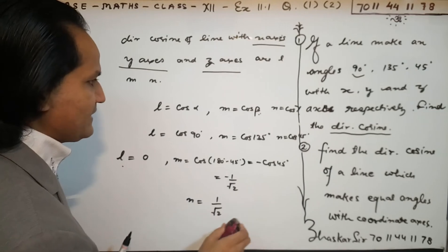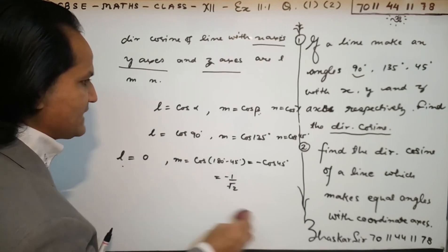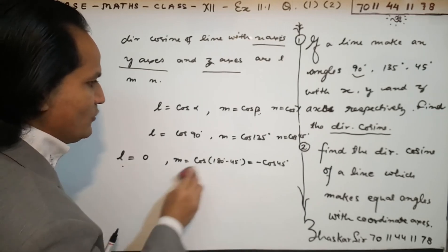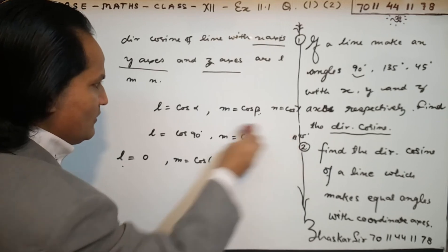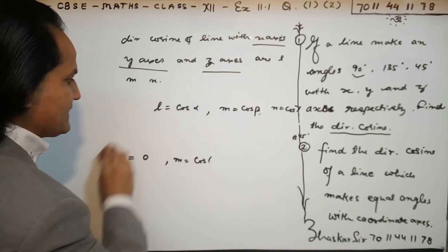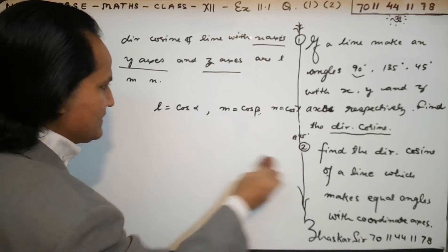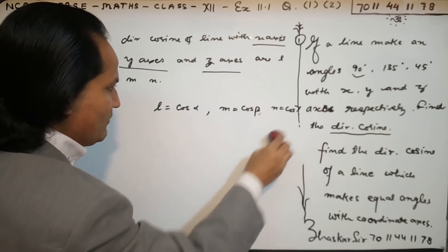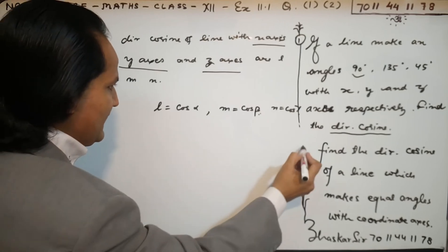Now I am taking the second question: find the direction cosines of the line which makes equal angles with the coordinate axes. Here is a very critical piece of information — the line makes equal angles with all axes.